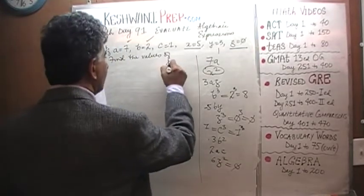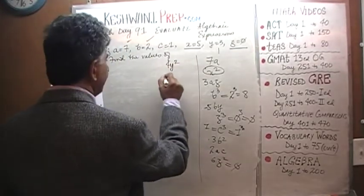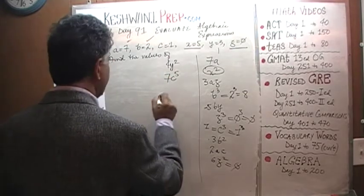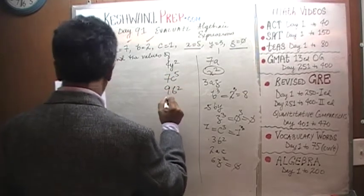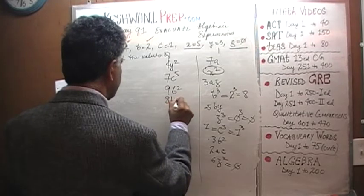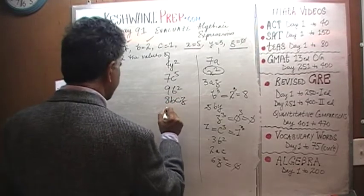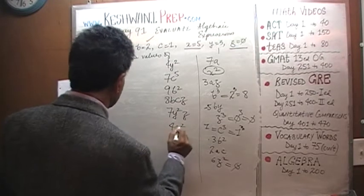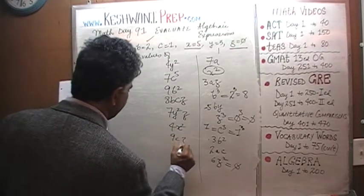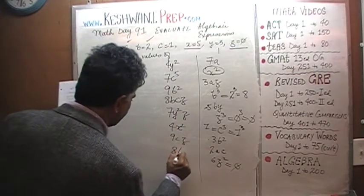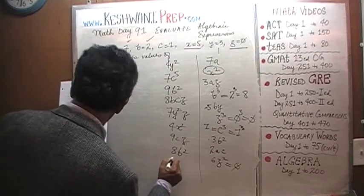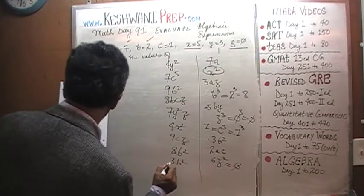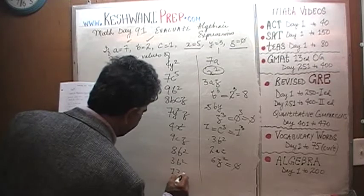4Y squared, 7C raised to 5, 9B squared, 8BCZ, 7Y squared Z, 4X squared, 9CZ, 8B squared, 3B squared, and finally 13C raised to 5.